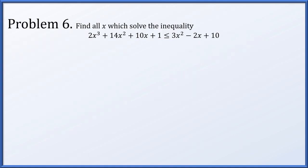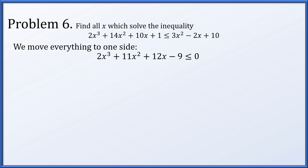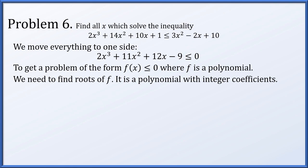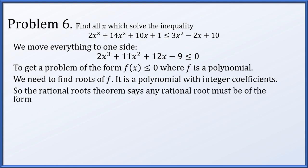Problem 6. Find all x which solve the inequality: 2x³ + 14x² + 10x + 1 ≤ 3x² - 2x + 10. The first step is to move everything to one side. Subtracting 3x², adding 2x, and subtracting 10 gives the inequality 2x³ + 11x² + 12x - 9 ≤ 0. Finding roots of this polynomial is now relevant to solving where it is less than or equal to 0.